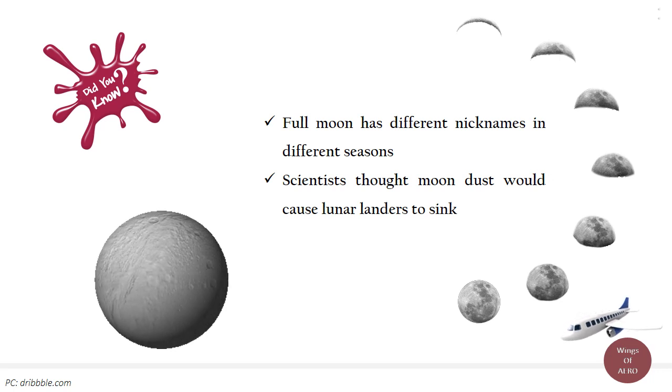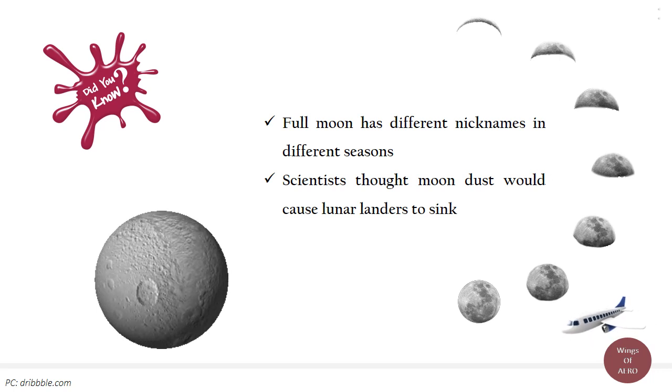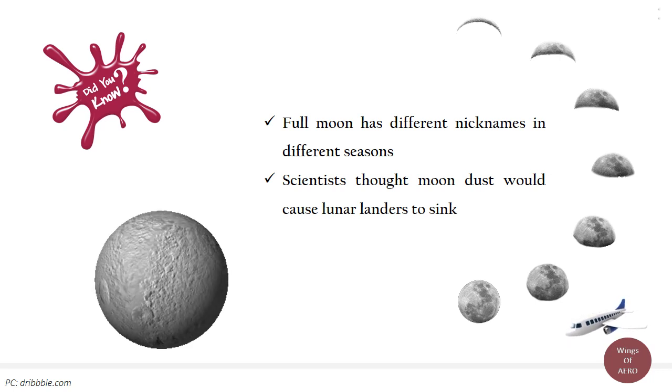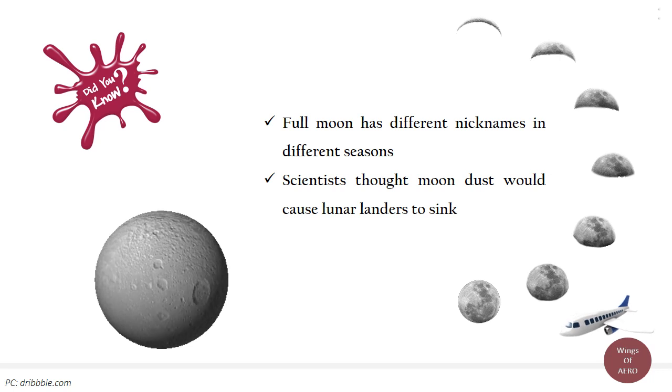Scientists thought moon dust would cause lunar landers to sink. When preparing to send missions to the moon, some scientists feared that a thick layer of dust on the body's surface would cause complications. One of the strongest proponents of the dust theory was Thomas Gould, an astrophysicist at Cornell University.